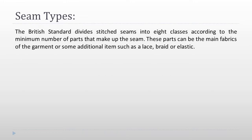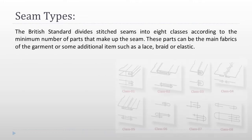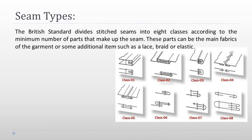Seam types. The British standard divides stitched seams into eight classes according to the minimum number of parts that make up the seam. These parts can be the main fabrics of the garment or some additional items such as a lace, braid, or elastic.